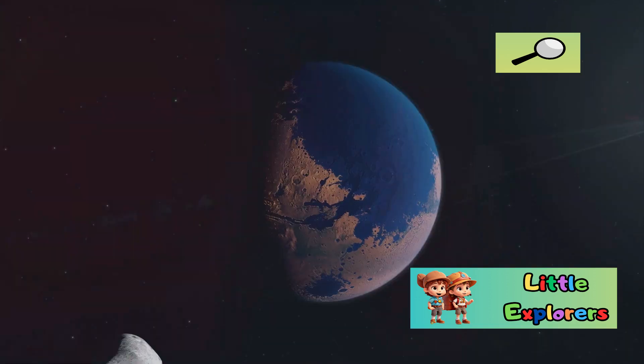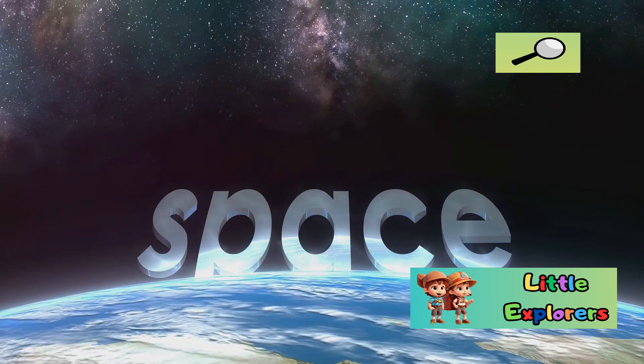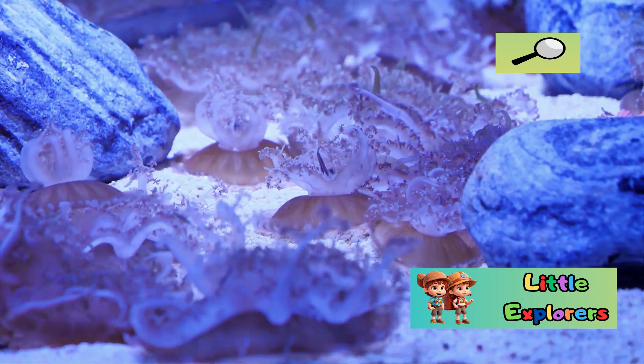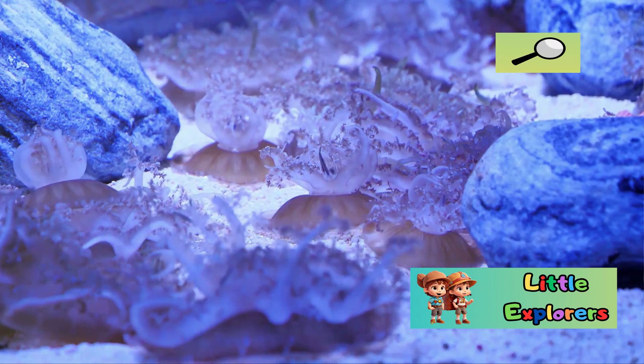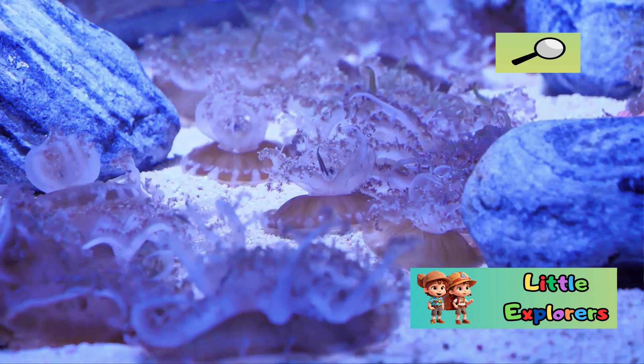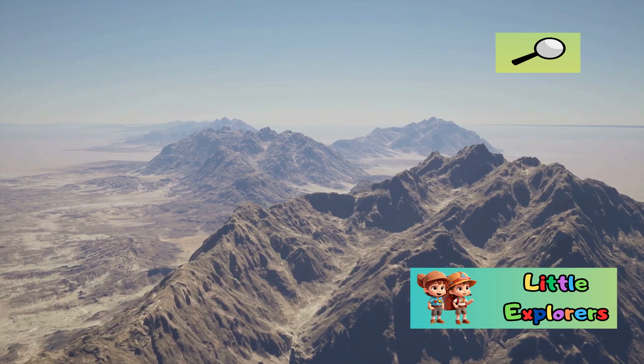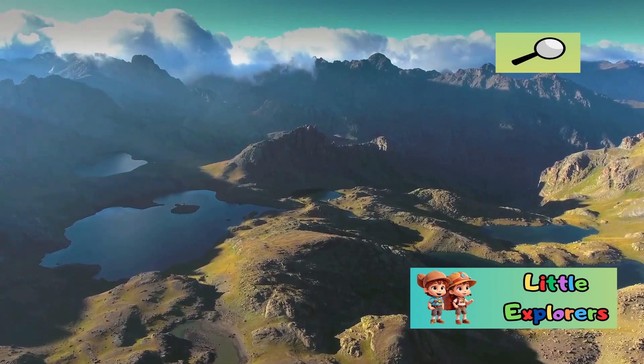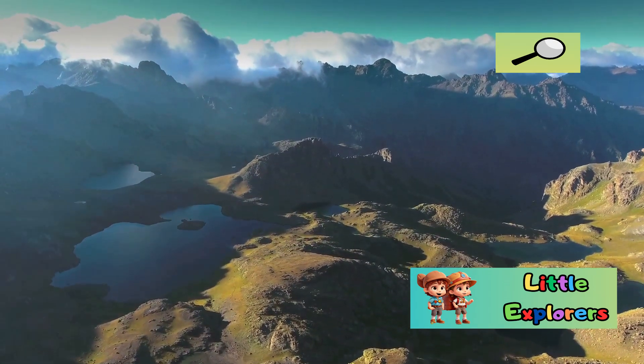Section four, life finds a way. Life, in all its myriad forms, has an incredible ability to adapt and thrive in the most unexpected places. From the depths of the oceans, where sunlight barely penetrates and the pressure is immense, we find creatures that glow in the dark and have evolved unique ways to hunt and survive. To the tops of mountains, where the air is thin and the temperatures can plummet, life thrives on Earth in countless forms. Animals and plants have adapted to these harsh conditions, showcasing nature's resilience.